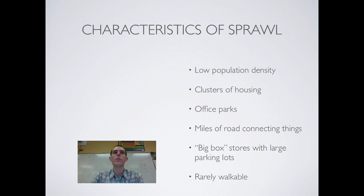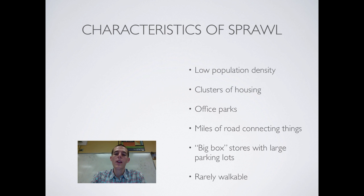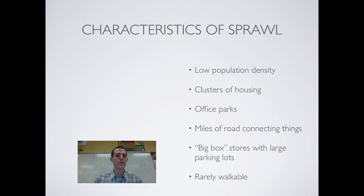There are some characteristics of urban sprawl you need to know. Suburban areas generally have low population density, meaning very few people living across a large amount of land. Housing is in clusters — subdivisions or gated communities where houses all look alike, built by the same developer, forming their own contained little community. You've also got office parks, where rather than traditional high-rise offices downtown, you have clusters of small low-lying office buildings all grouped together in one area.